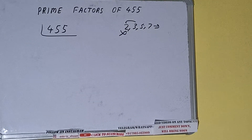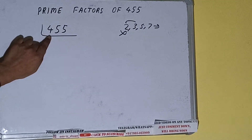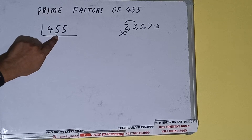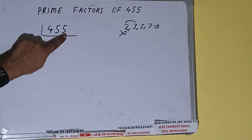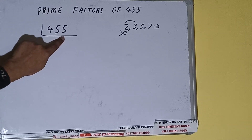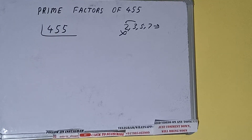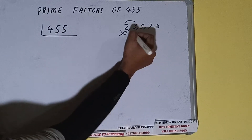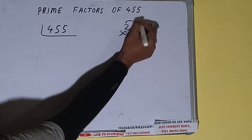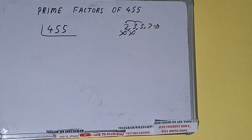Is 455 divisible by 3? We check: 3×1=3, 1×5=3... No, it is not divisible by 3. Let's check with 5 — the last digit is 5.